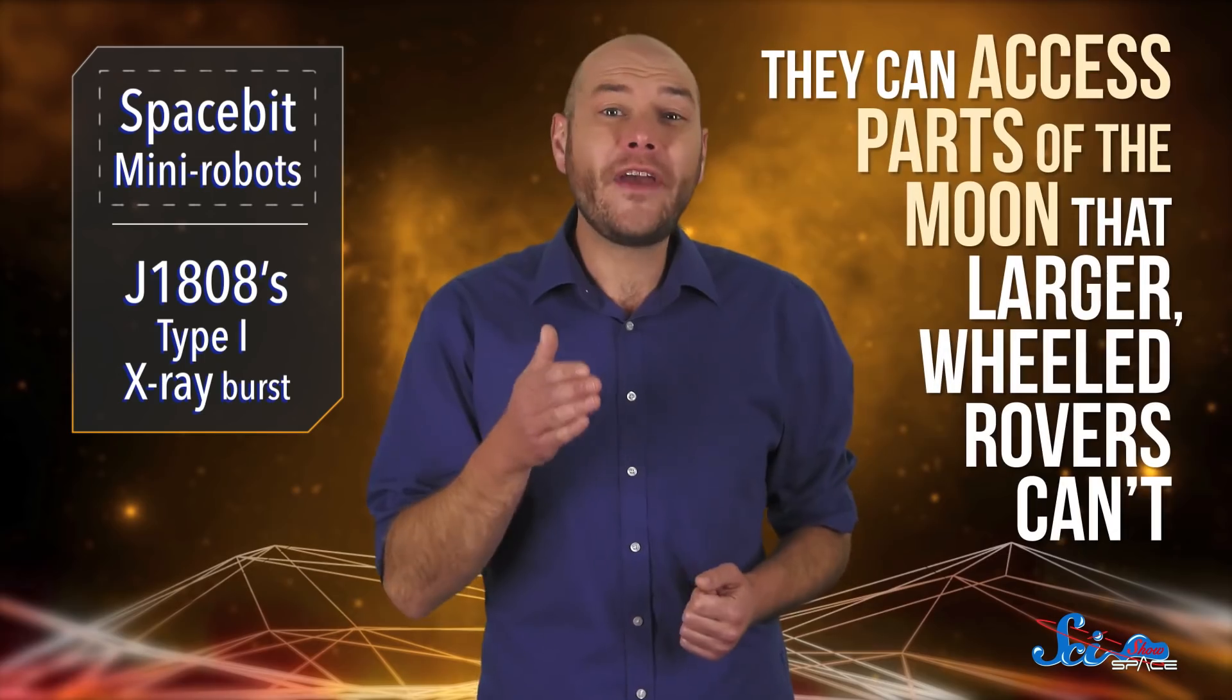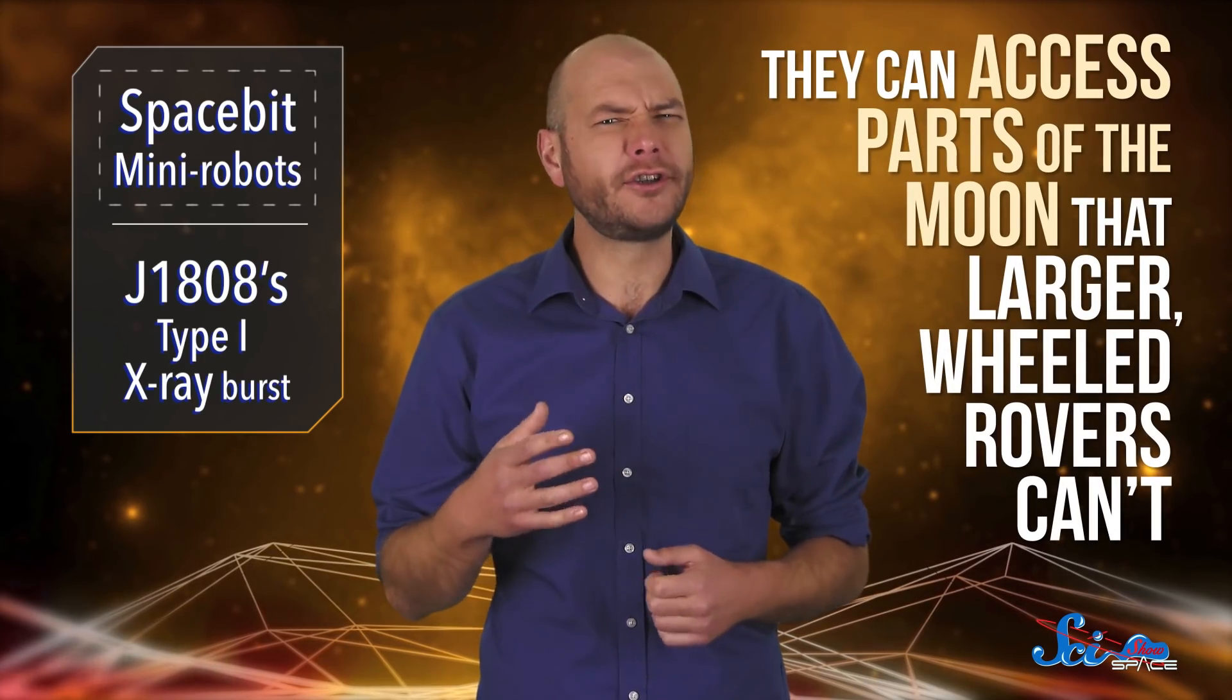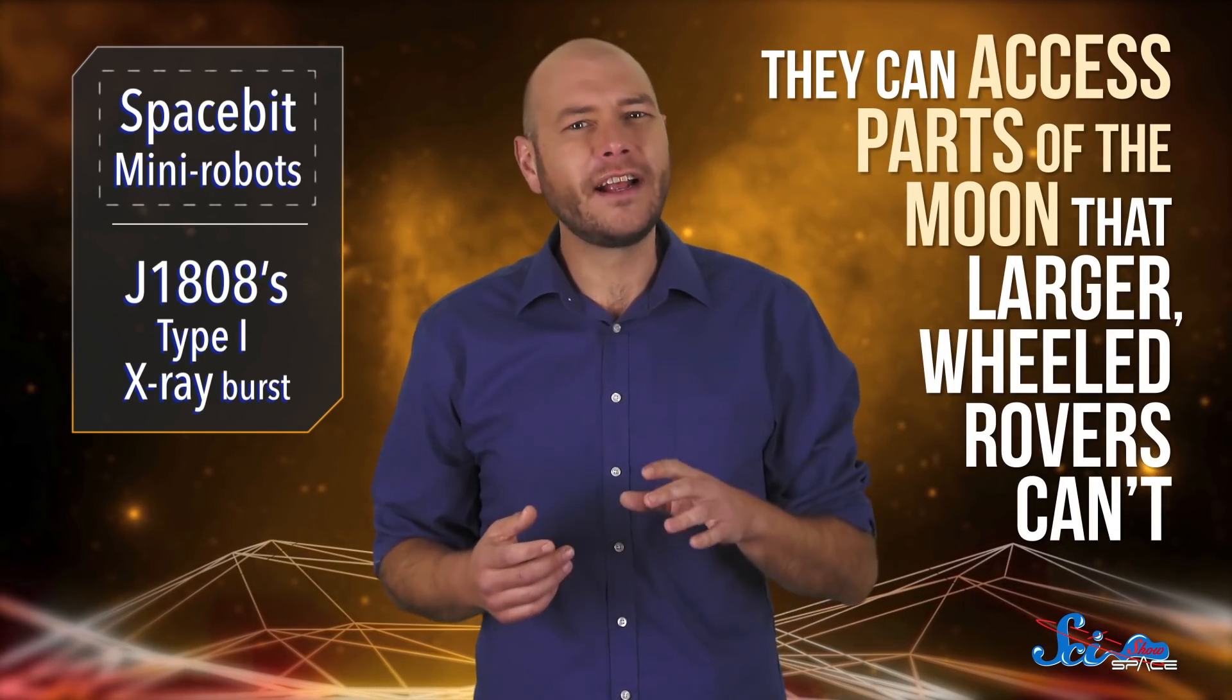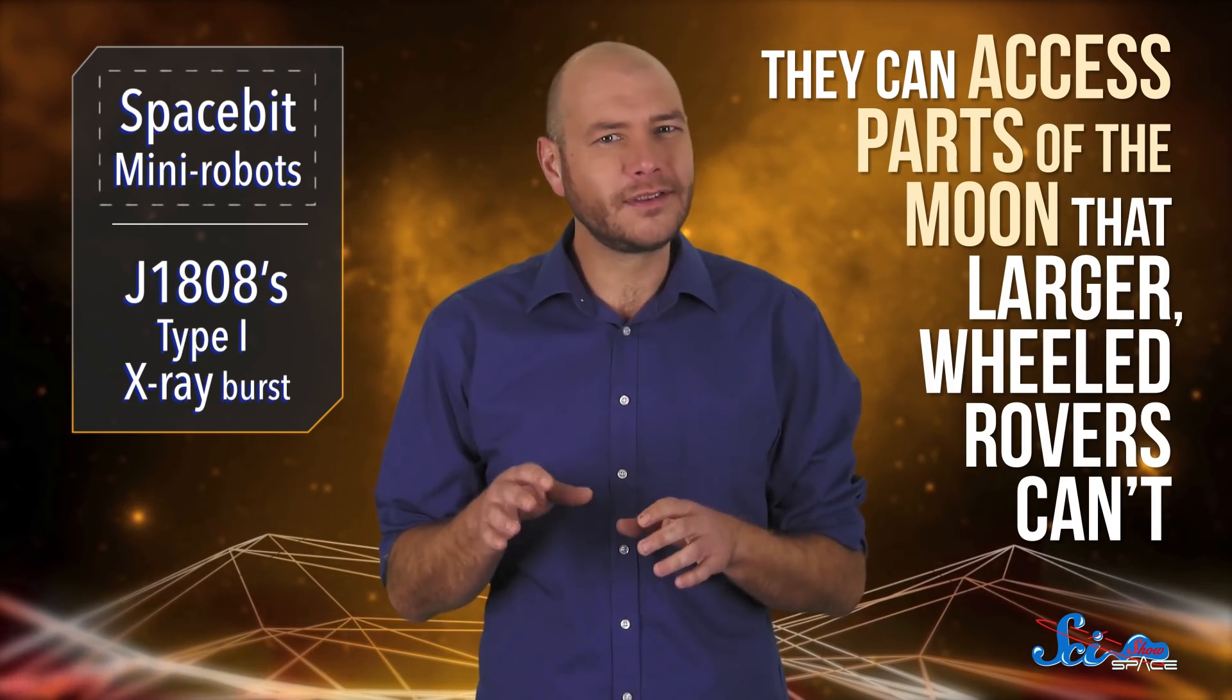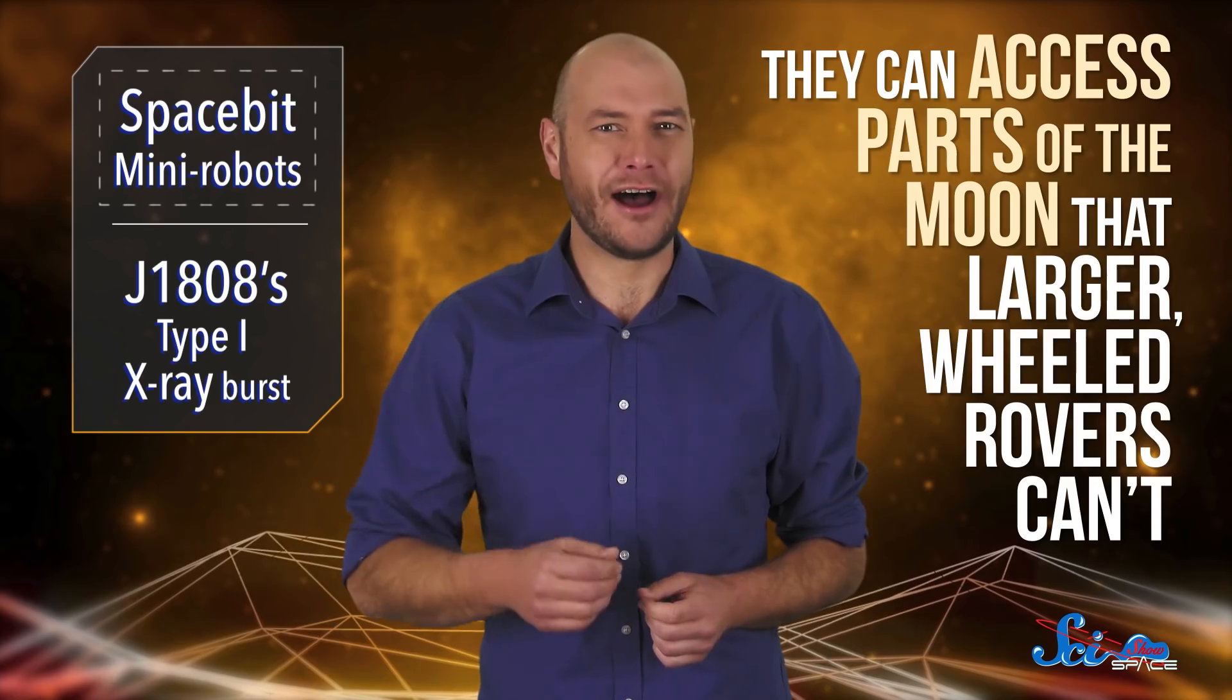Their small size means Spacebit can send more than one in a single rocket launch, and they can access parts of the Moon that larger, wheeled rovers can't. That includes features like cracks, crevices, and even lava tubes, hollow tunnels formed by ancient streams of lava.